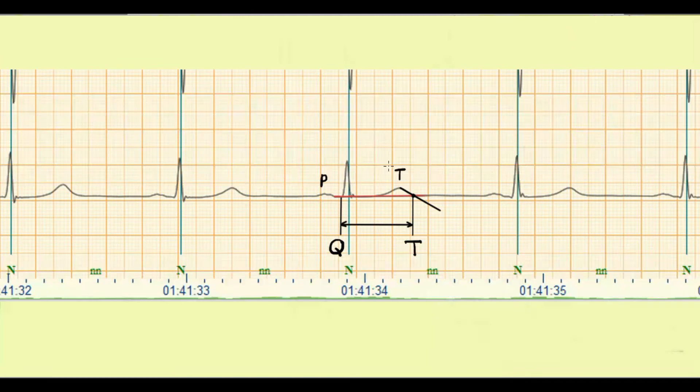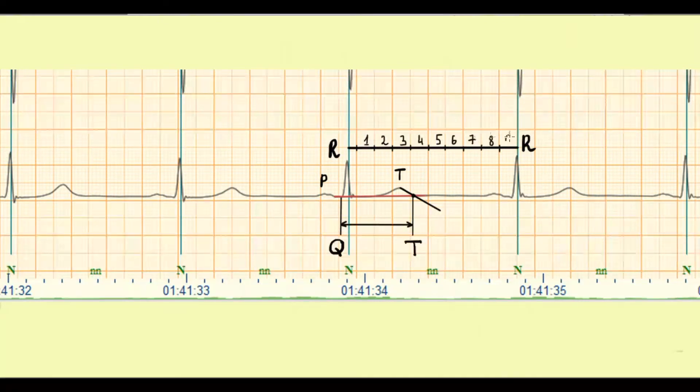Let's try. For this you need to measure RR and QT intervals and calculate the heart rate. Paper speed is 50 mm per second.